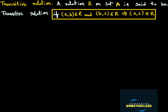First, we will try to understand what is transitive relation. A relation R on set A is said to be a transitive relation if ordered pair (A,B) belongs to R and ordered pair (B,C) belongs to R, then ordered pair (A,C) also belongs to R. Then we say that that relation is a transitive relation.